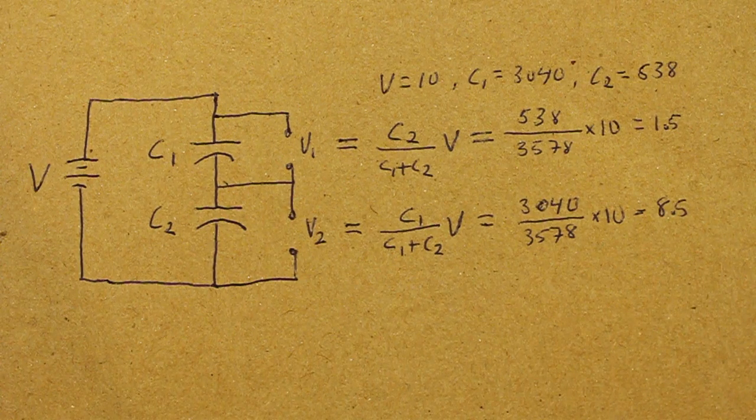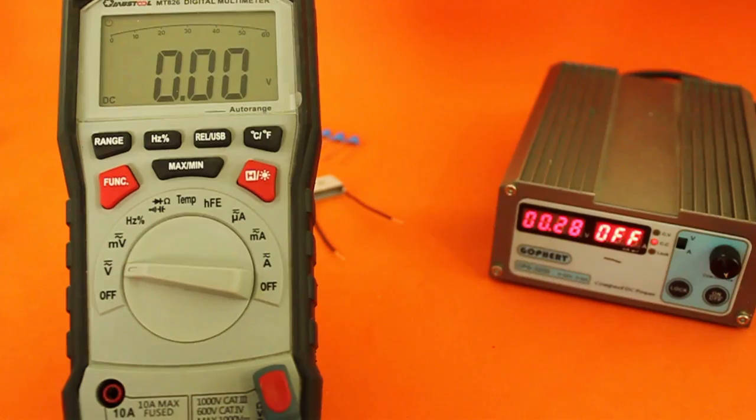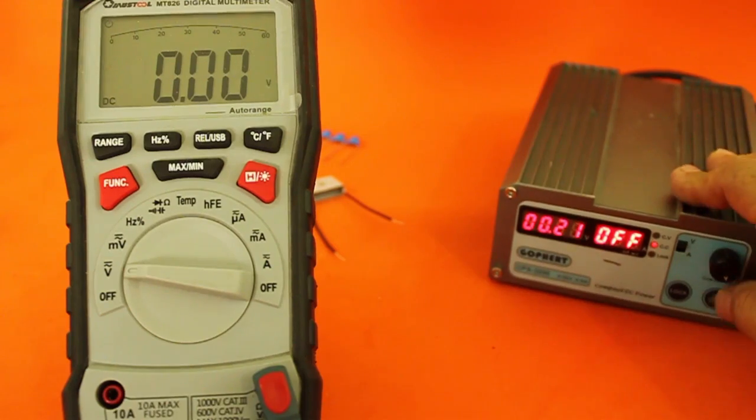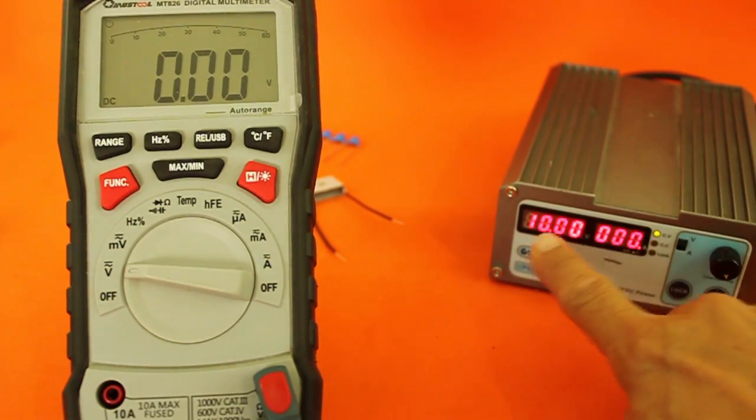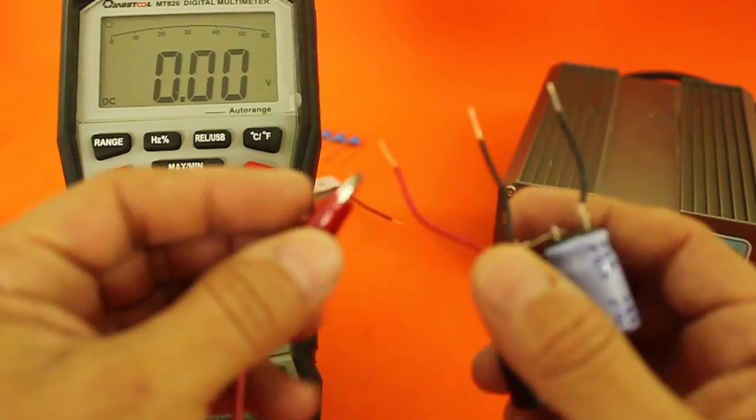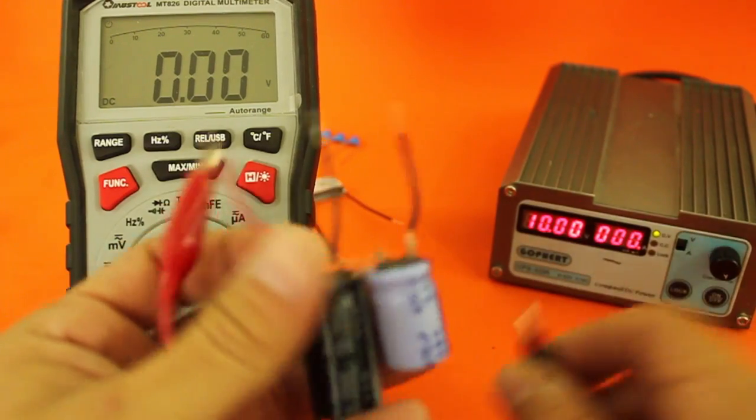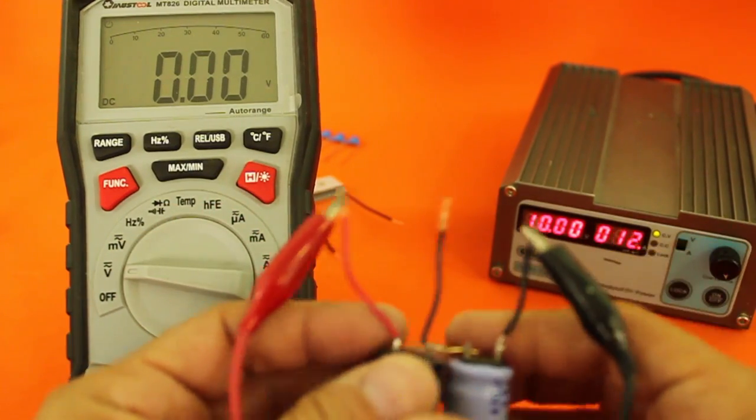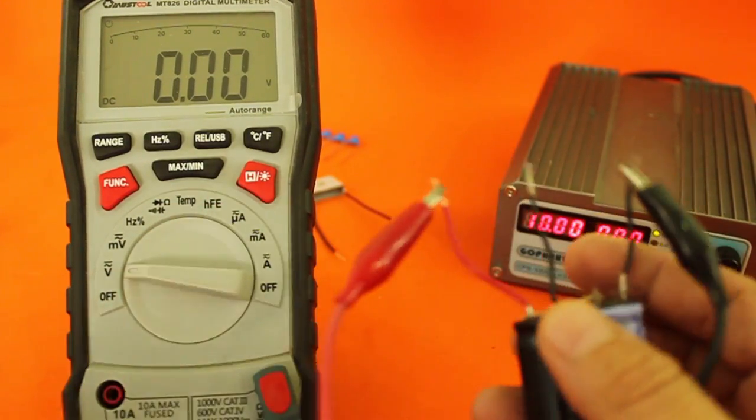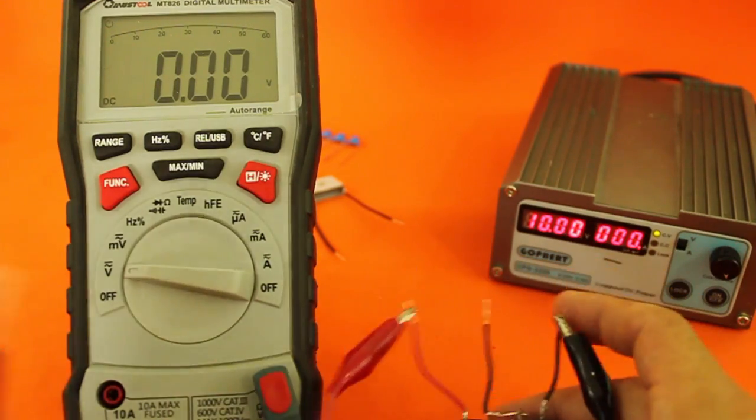So, let's now measure it with the multimeter. Let's now charge the capacitors at 10 volts. I'm going to connect them to the power supply. And now, I'm going to measure the voltage at each capacitor.